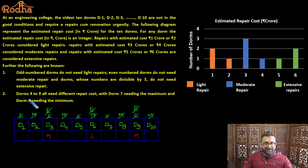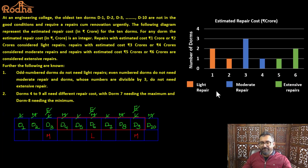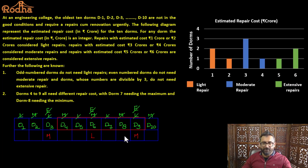DOMs 4 to 9 need different repair costs. So from DOM 4 to DOM 9, we must assign a different number to each. The available numbers are 1, 2, 3, 4, 5, and 6 crore — each used exactly once across these six DOMs.